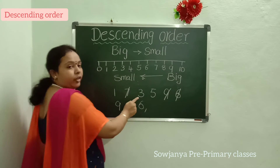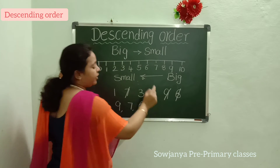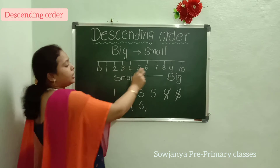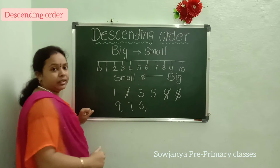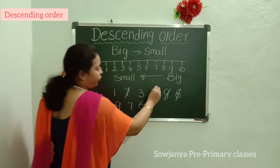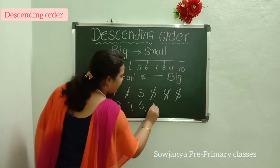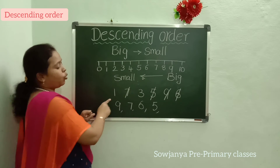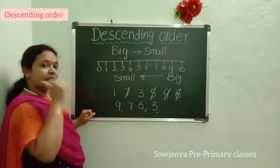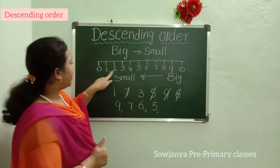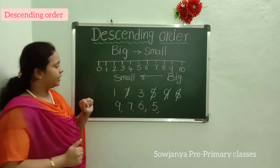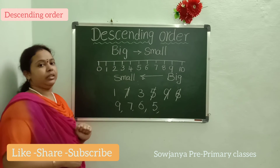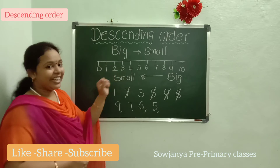Next, from 1, 3, 5 — in these 3 numbers, which is the big number? Observe on the number line. Yes, 5. Cross the 5 and write 5 here. Next, 1 and 3 — in these 2 numbers, which is the big number? See on the number line. Yes, 3.